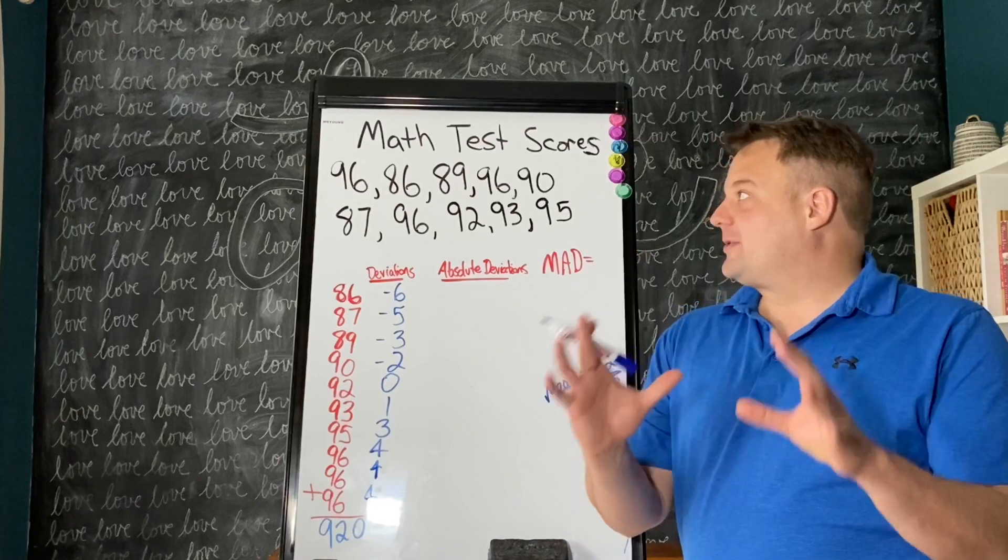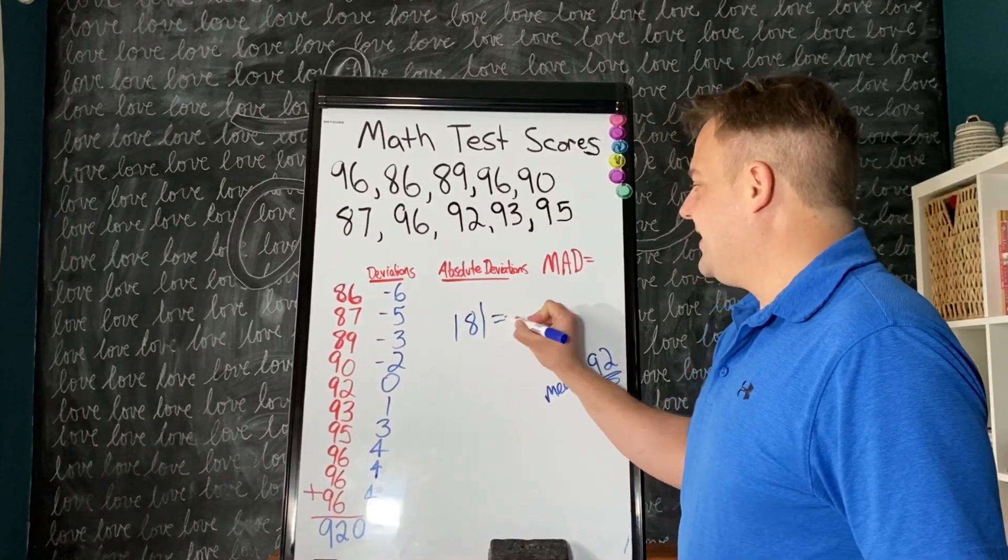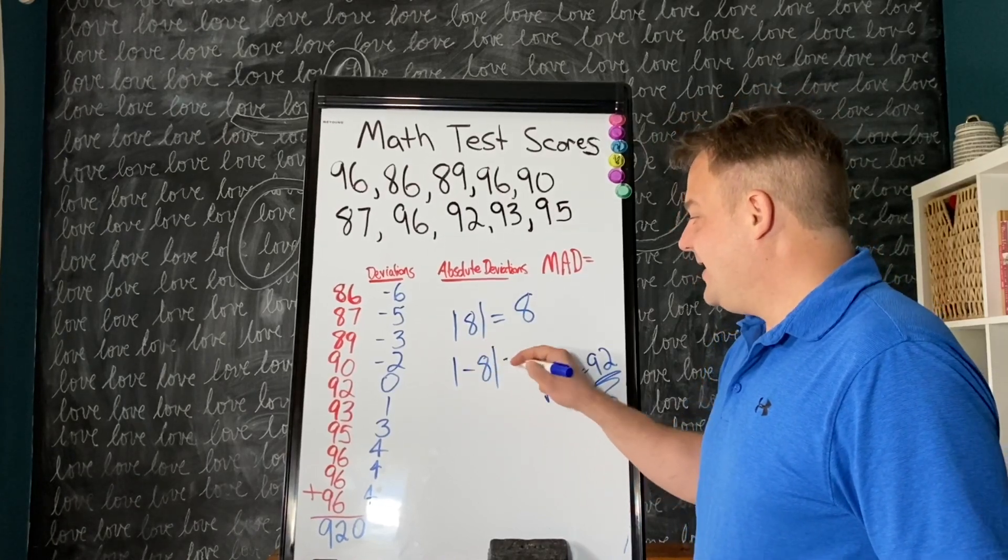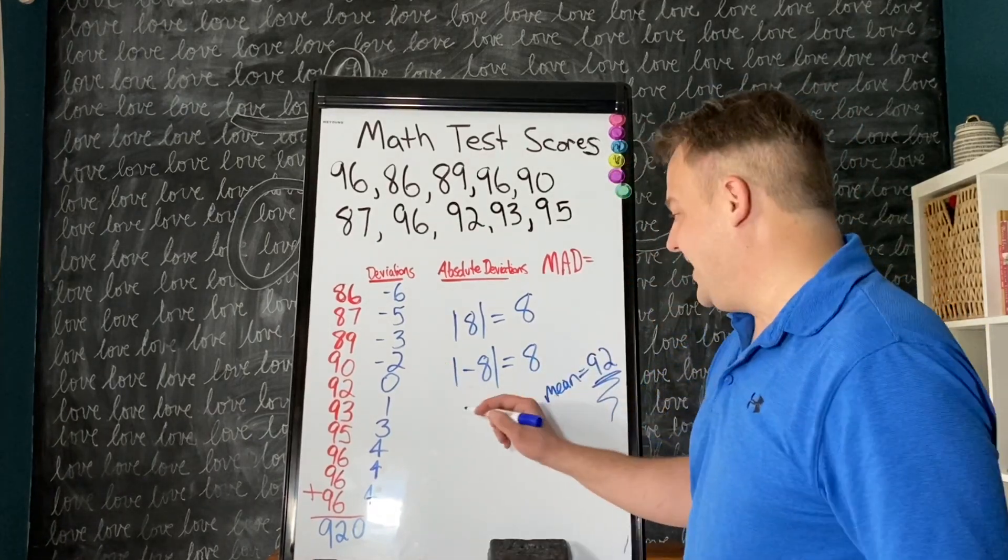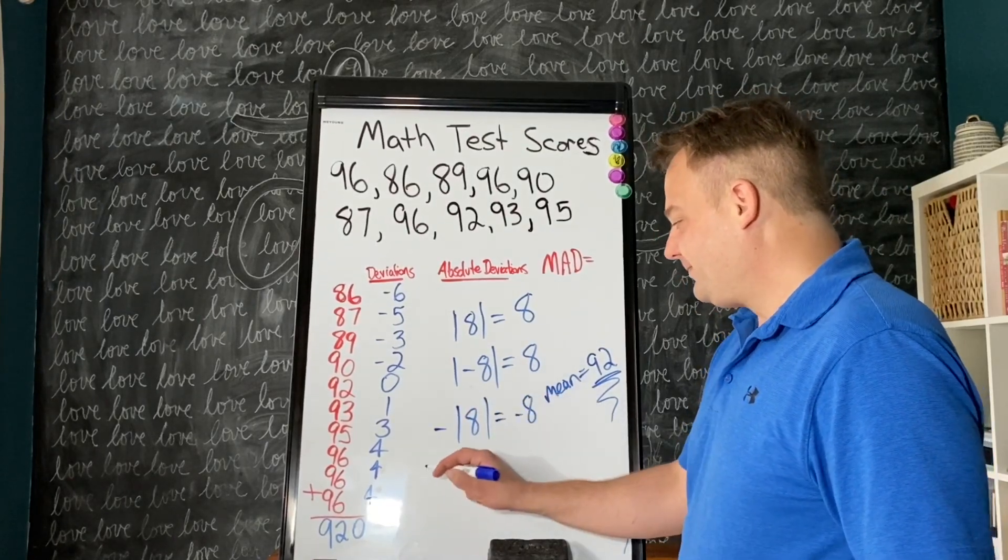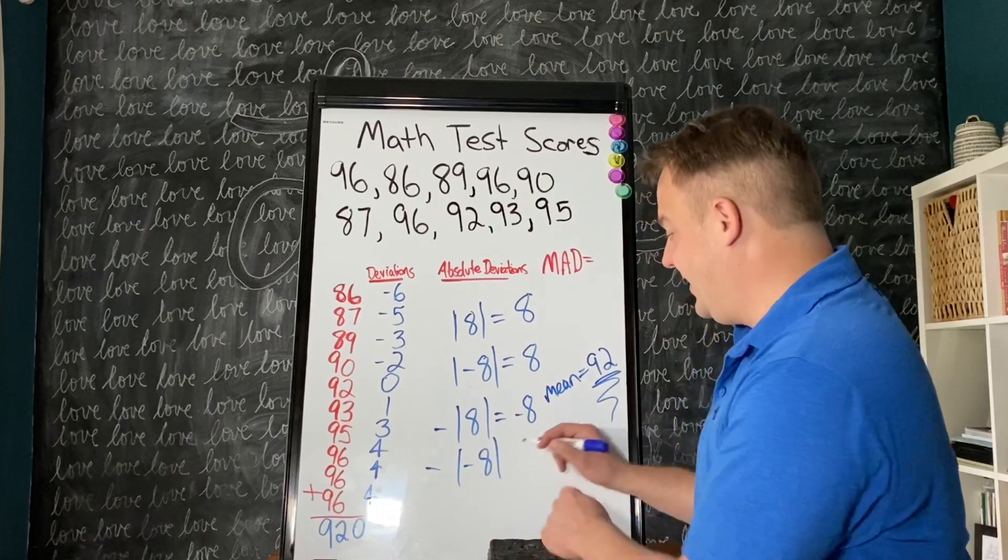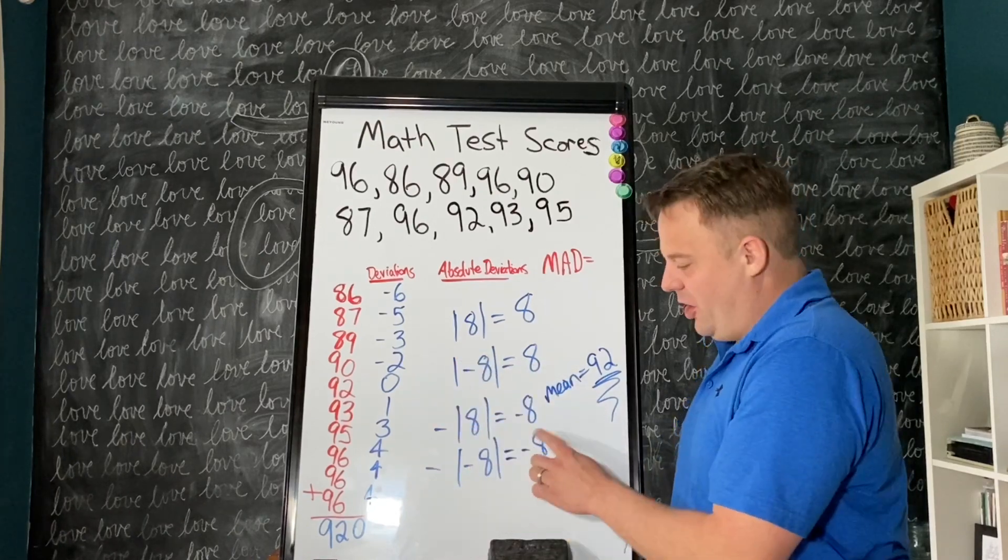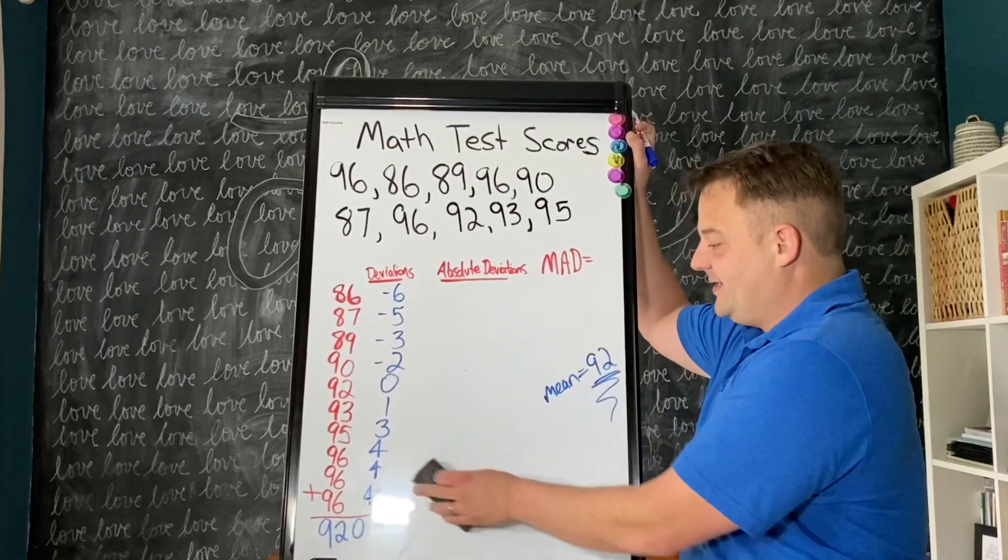Now we're going to go to absolute deviations. Let's review what absolute value is. The absolute value of 8 is 8. The absolute value of negative 8 is also 8. If the sign were outside, it would be negative. Absolute value means the distance from 0. Remember our mean is 92.